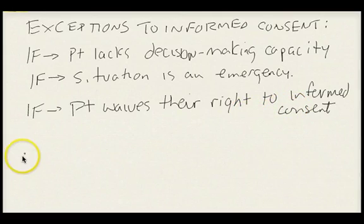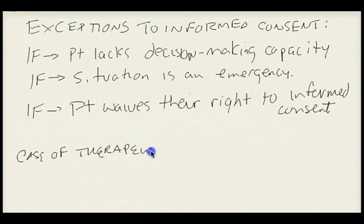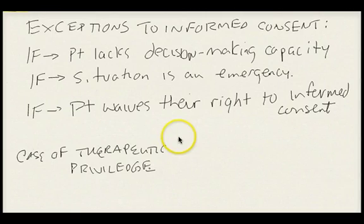There's something known as a case of therapeutic privilege. What this means is that sometimes we will withhold information that, if we were to give it to our patient, could severely hurt them. The case of therapeutic privilege means to withhold information that would otherwise severely harm the patient.